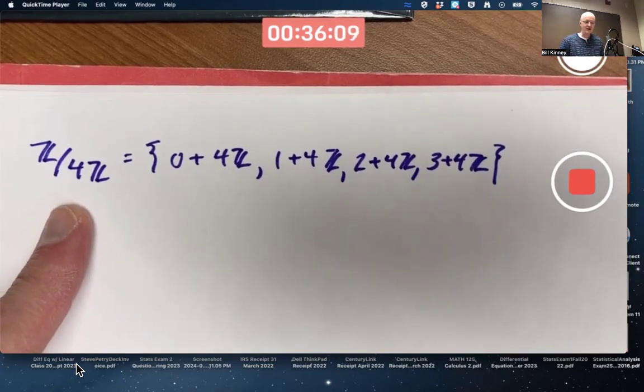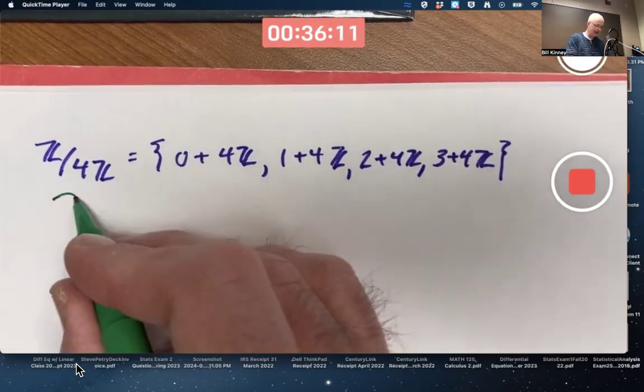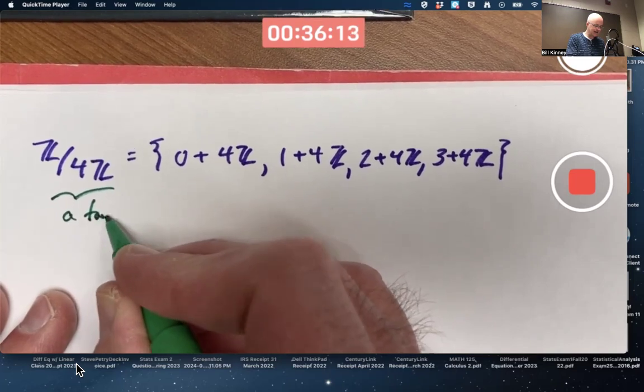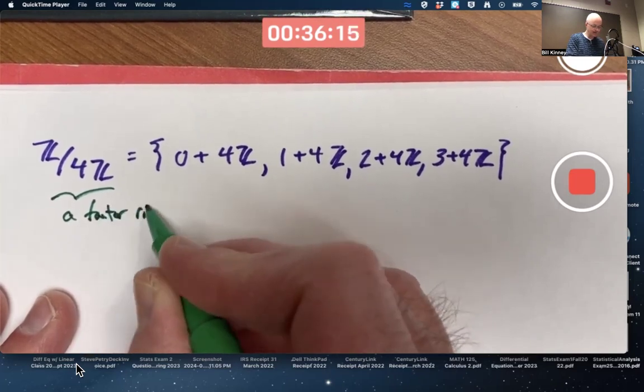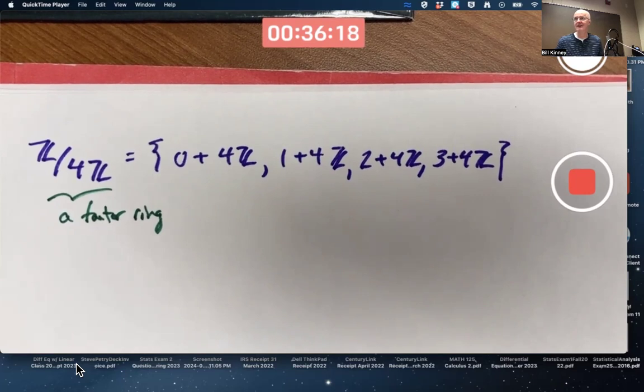So this is an example of a factor ring. It is a factor group as well, which makes sense. I mean, if this is going to be a ring, that does also mean it's got to be a group under addition.